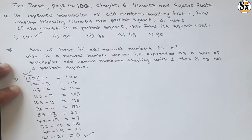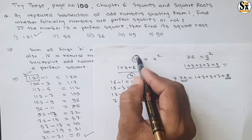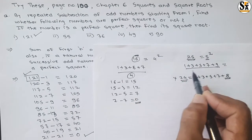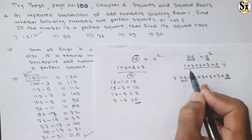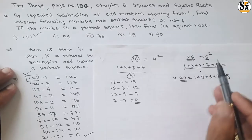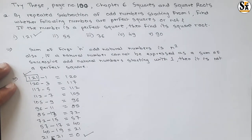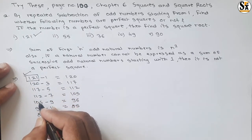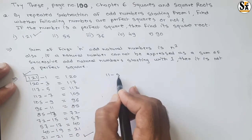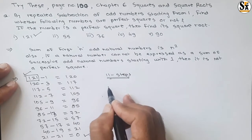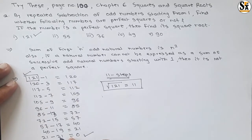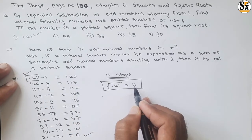To find the square root: we saw that for 16 we added 4 numbers, and for 25 we added 5 numbers. For 121, count the number of steps: 1, 2, 3, 4, 5, 6, 7, 8, 9, 10, 11 — we performed 11 steps. Therefore, the square root of 121 is 11.